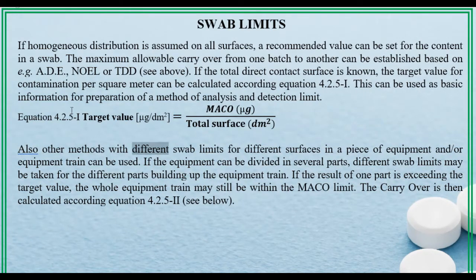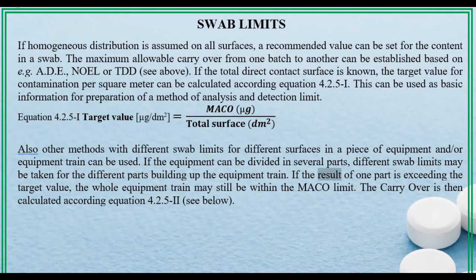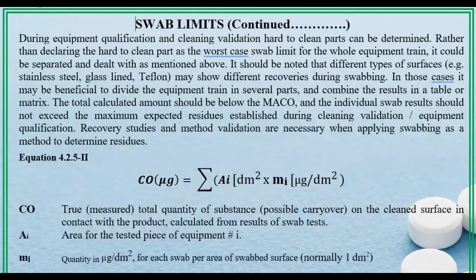Other methods with different swab limits for different surfaces in a piece of equipment and/or equipment train can be used. If the equipment can be divided into several parts, different swab limits may be taken for the different parts building up the equipment train. If the result of one part is exceeding the target value, the whole equipment train may still be within the MACO limit. The carryover is then calculated according to Equation 4.2.5-2.